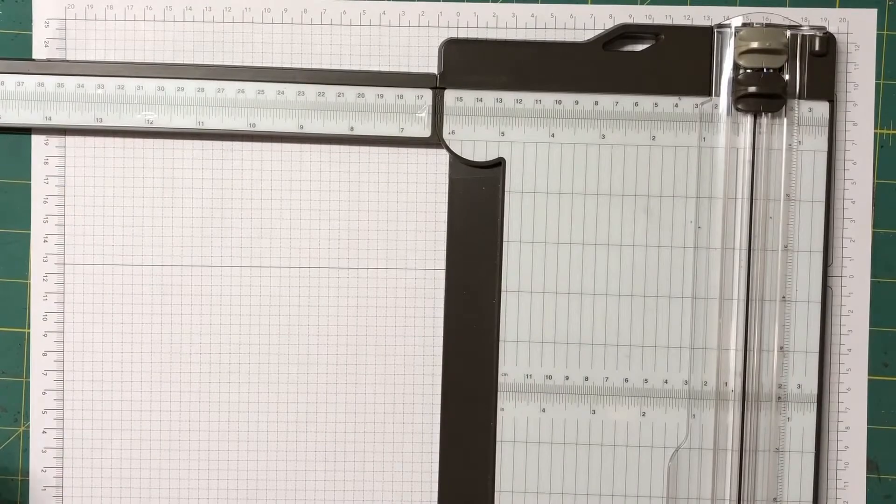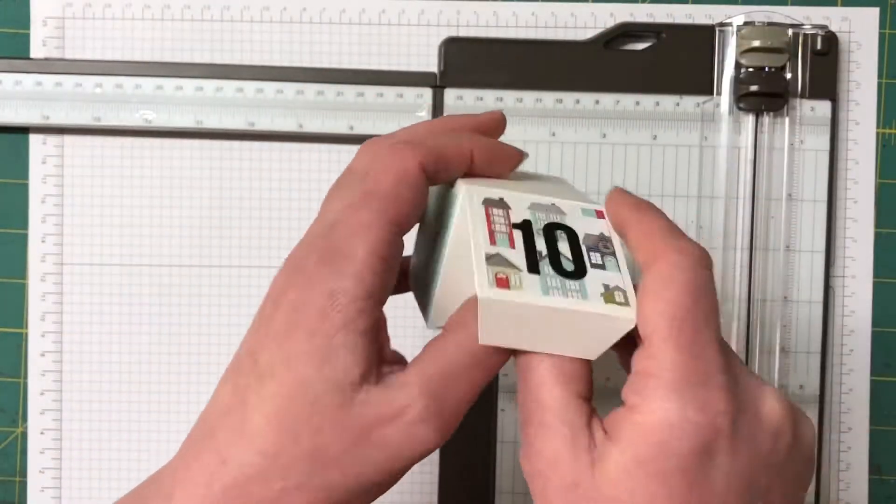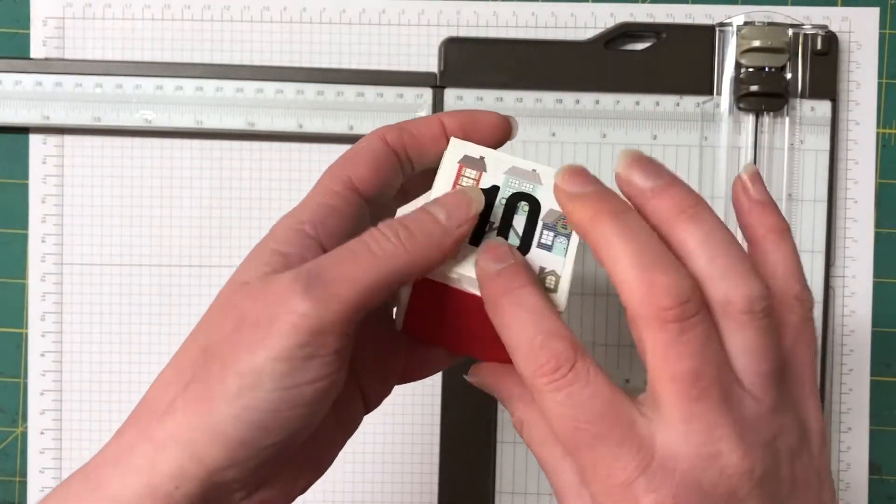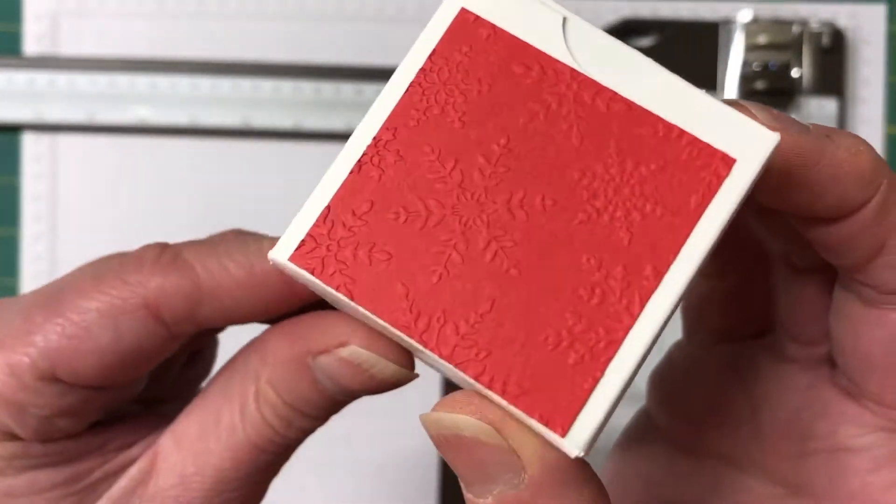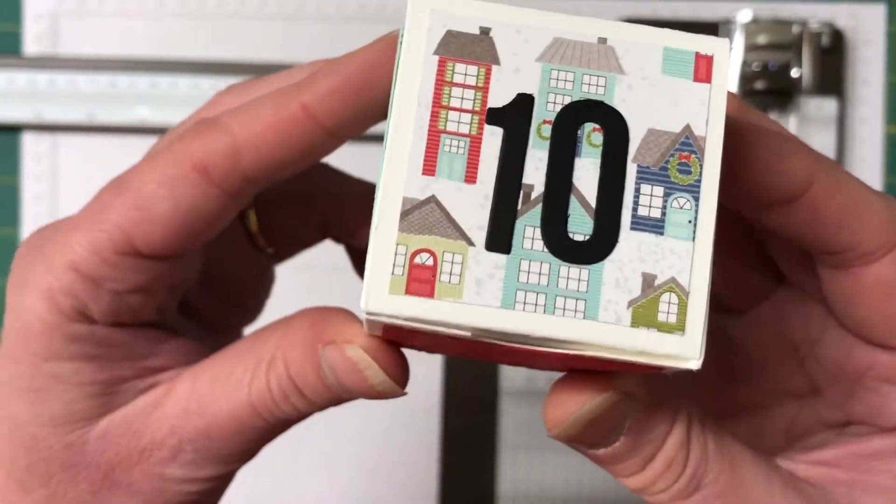So I've already made 24 of the boxes. We need to make the 25th one and I'm going to show you in just a second the sides of the box. So we have coordinating cardstock and it has been embossed with the winter snow embossing folder.